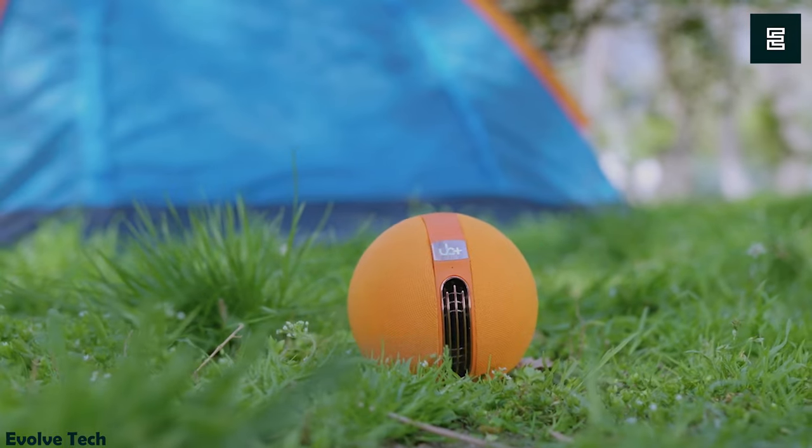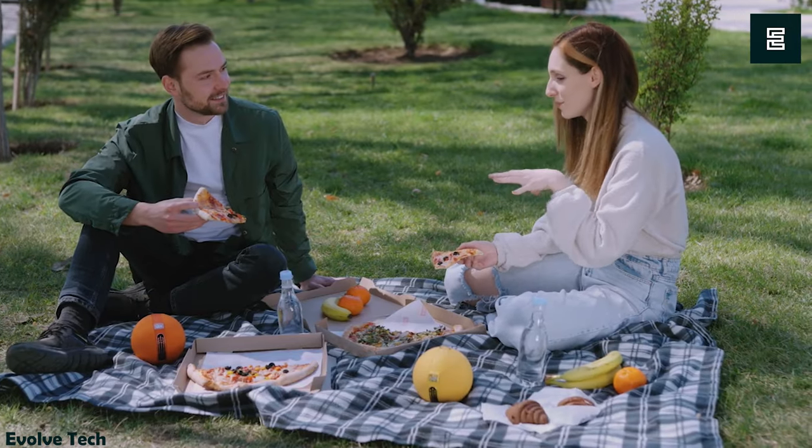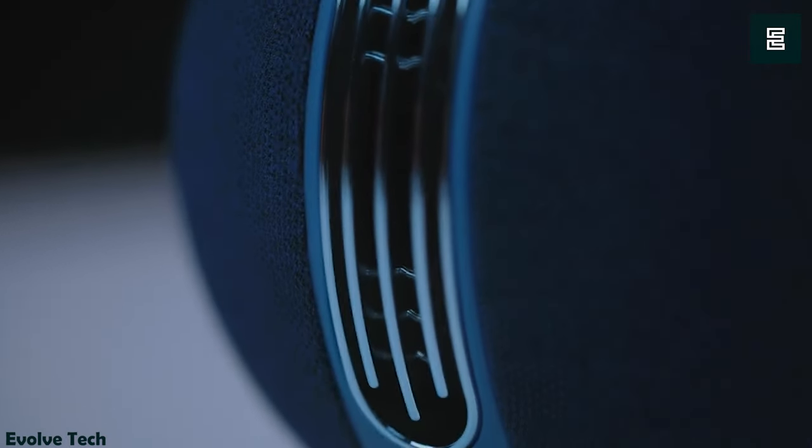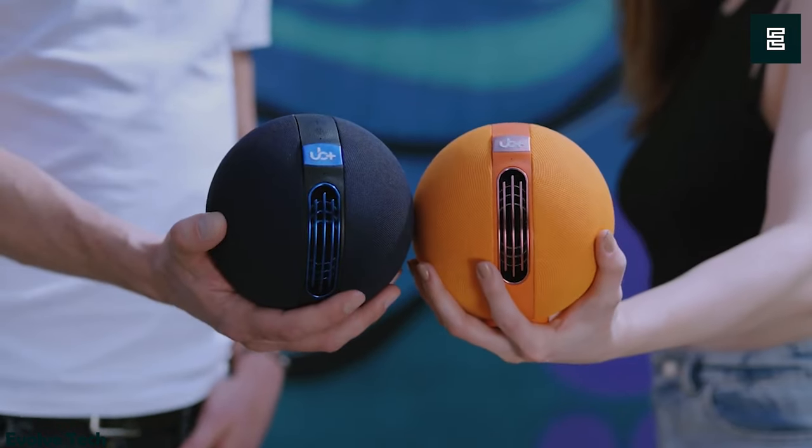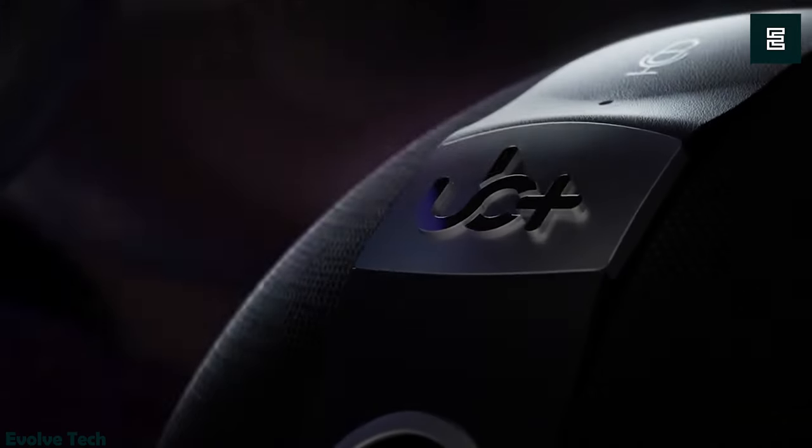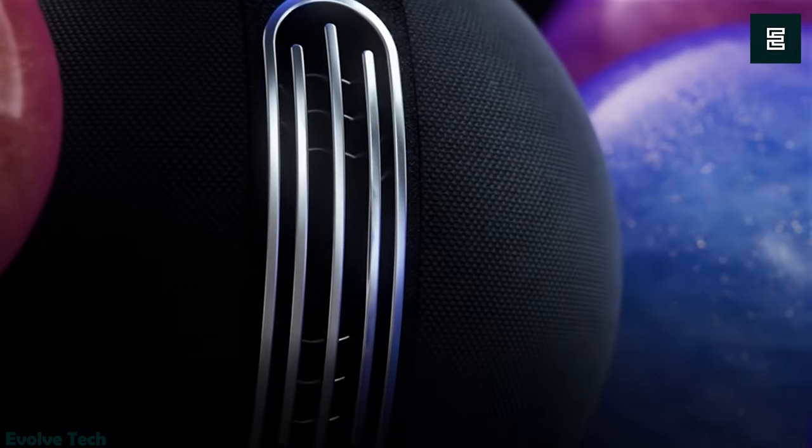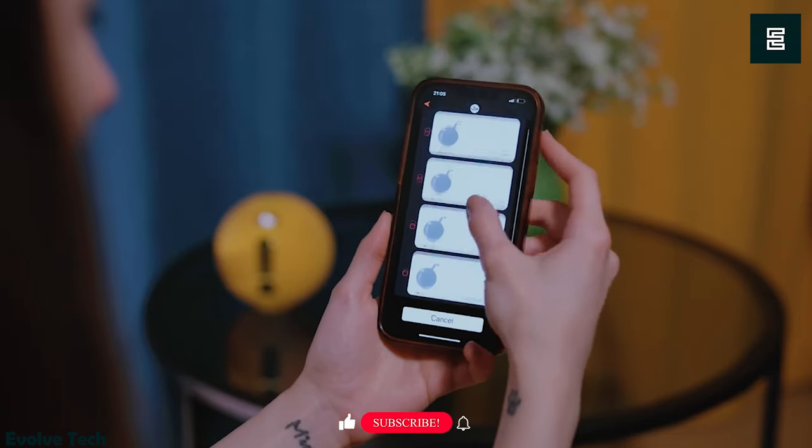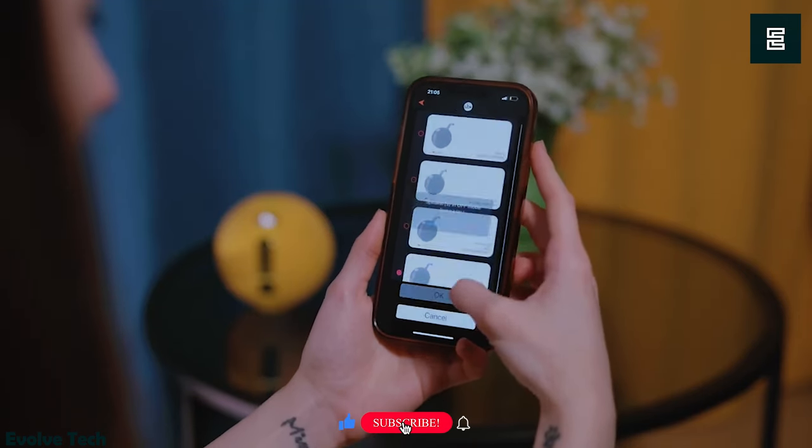Perfect for travel, the S1 Circle is IPX5 waterproof, safeguarding it against rain damage. Strategically positioned drivers and passive radiators create an immersive soundscape, offering a truly wireless experience. Connect up to 8 units for an expansive party atmosphere and for TV surround sound. Pair two S1 Circles for excellent stereo audio.